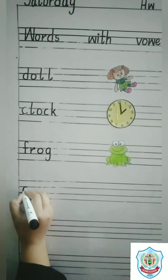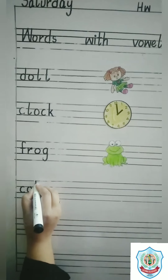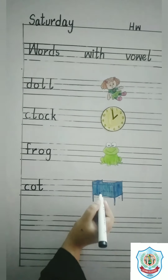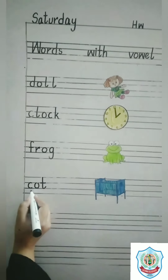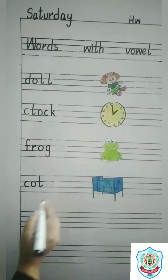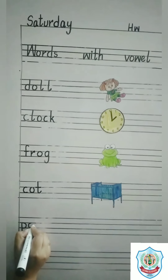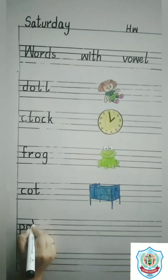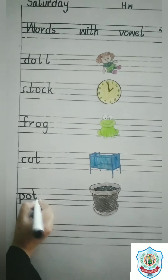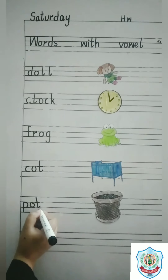Next word is Cot. C has a sound K, O has a sound O, and T has a sound T. Cot. And this is a picture of cot. C, O, T. Cot. Next word is Pot. P has a sound P, O has a sound O, and T has a sound T. Pot. And this is a picture of pot. P, O, T. Pot.